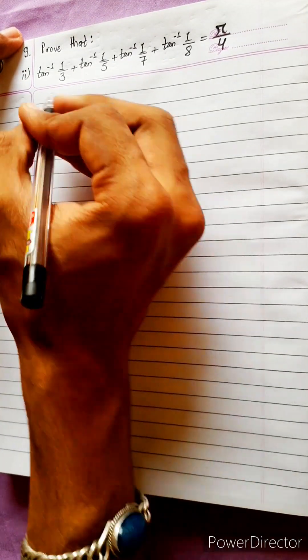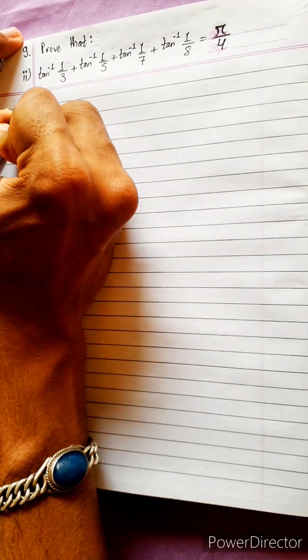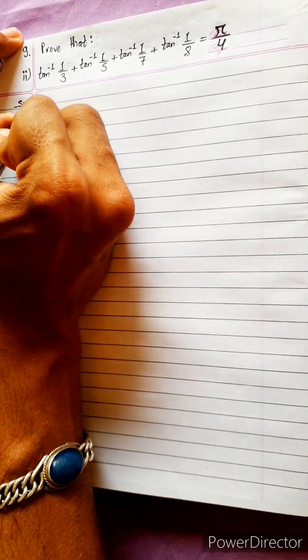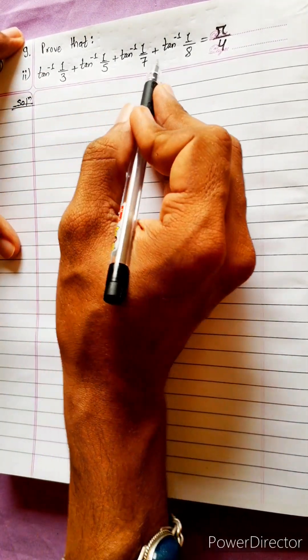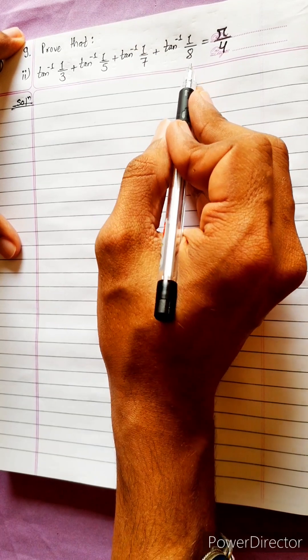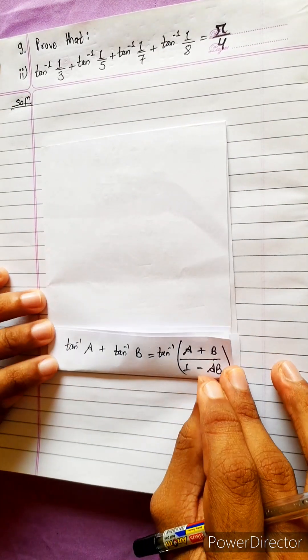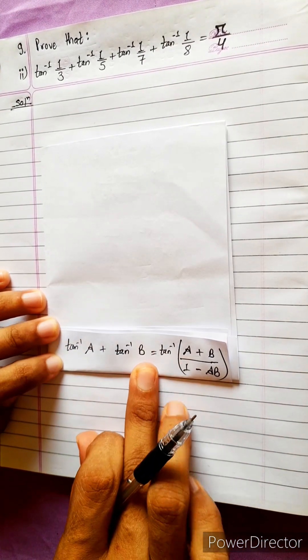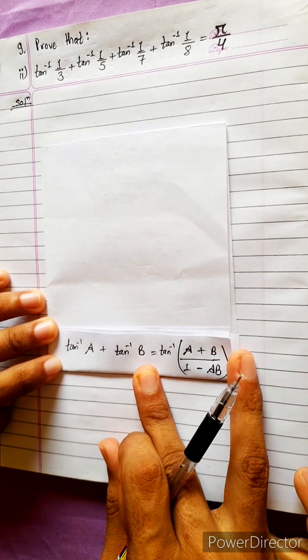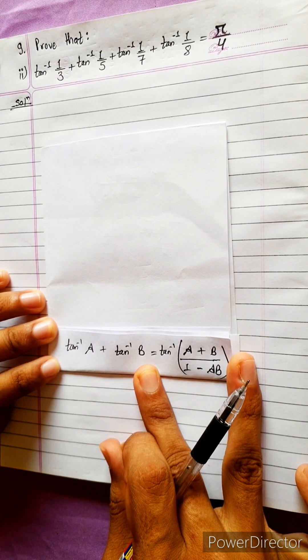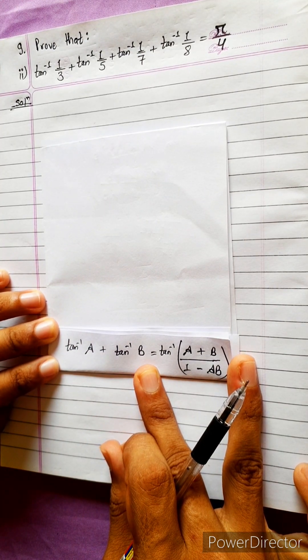Prove that tan inverse 1/3 plus tan inverse 1/5 plus tan inverse 1/7 plus tan inverse 1/8 equals pi by 4. I am using the formula: tan inverse A plus tan inverse B equals tan inverse bracket A plus B by 1 minus AB.